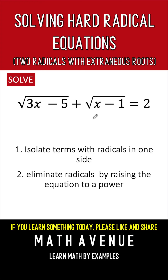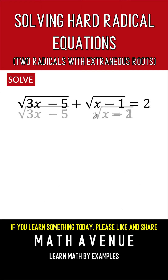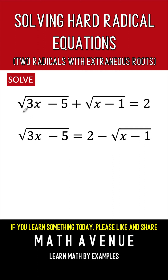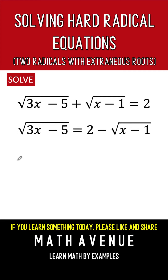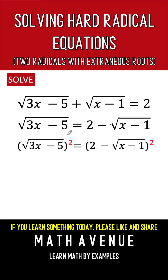So let's start by eliminating one of the radicals. We isolate the square root of 3x minus 5 on the left side of the equation, meaning all other terms go to the right side. Then, to eliminate this square root, we square both sides of the equation. The left side is raised to the second power, and the entire right side is also squared. The square root and the exponent two cancel each other out, so our left side is now 3x minus 5.